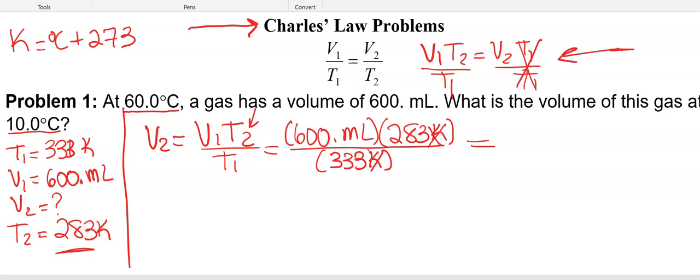Cancel the units to make sure that you plug things in correctly. We're solving for volume. We're going to end up with milliliters. And when I plug this particular one into my calculator, I get 509.9099.